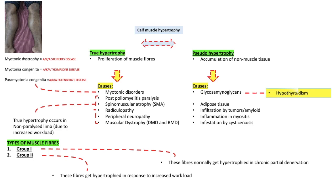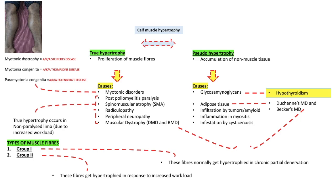Glycosaminoglycan accumulation is commonly seen in hypothyroidism. Adipose tissue accumulation is seen in Duchenne's muscular dystrophy and Becker's muscular dystrophy. Both Duchenne's and Becker's muscular dystrophy have both true hypertrophy as well as pseudo-hypertrophy.